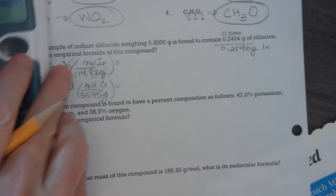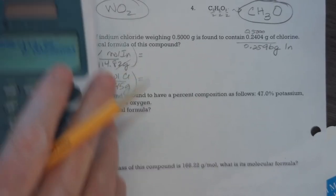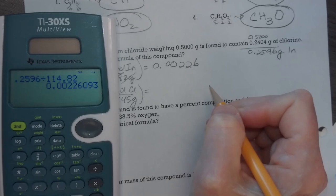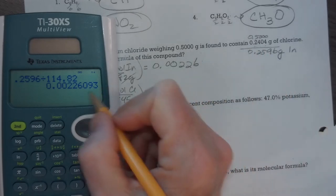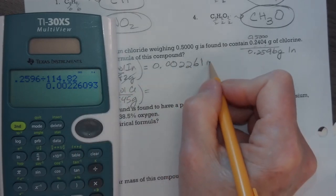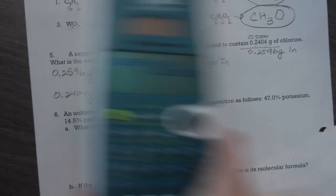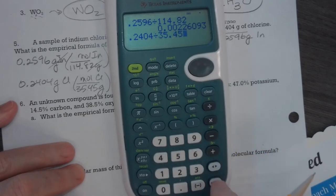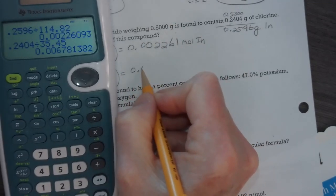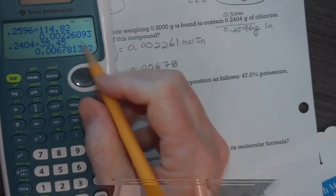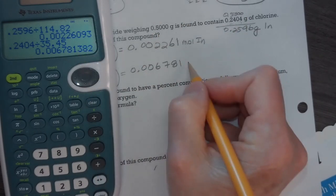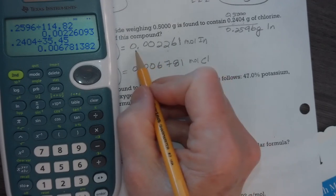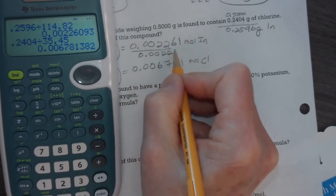So I will divide these. I get 0.2596 divided by 114.82. I only have 0.00226, and since there's four significant figures, I will round that to 0.00261 moles of indium. And then for chlorine, I have 0.2404 divided by my molar mass of chlorine. And I have 0.006781 moles of chlorine. Now, which of these is smaller? The 0.00261 is smaller. So I divide these each by the smaller number.